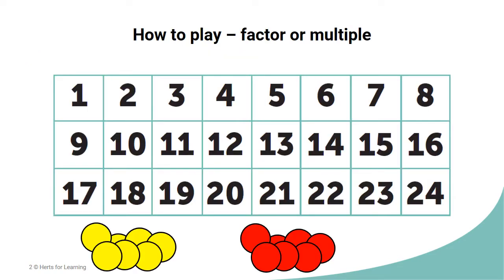To play Factor or Multiple, it would be useful to create a game board like the one you can see displayed on the screen. The game board should have the numbers 1 to 24 listed. Only one game board is needed, although these could be laminated so that they can be used repeatedly.